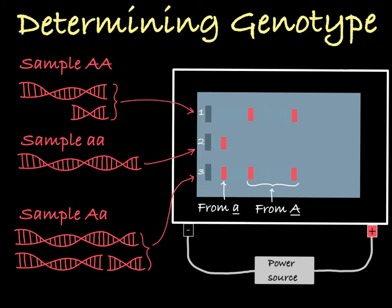So there you have it. As long as you know which allele contains the restriction site, you can determine someone's genotype based on how the DNA behaves in a gel after it has been digested with a restriction enzyme.